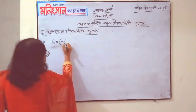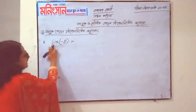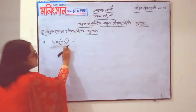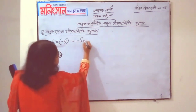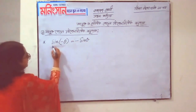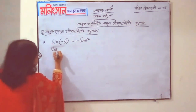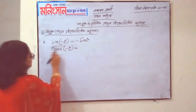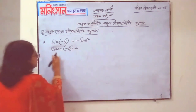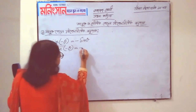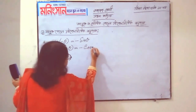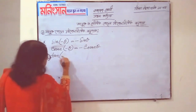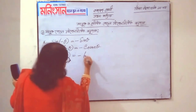When you think of sin minus theta, then you'll get minus sin. But when you think of sin minus theta, then you'll get minus sin theta. If you think of sin minus theta, then you'll be minus theta. And then you'll be minus theta. If you think of 2 minus theta, then it will be minus theta.